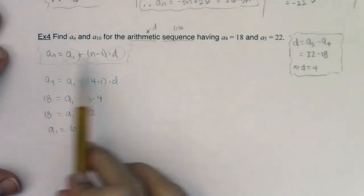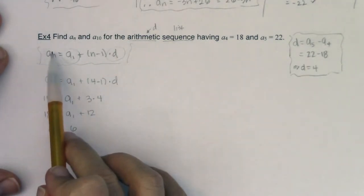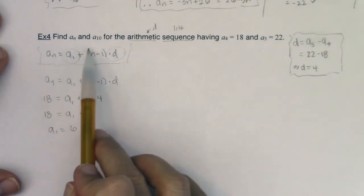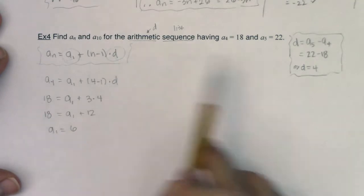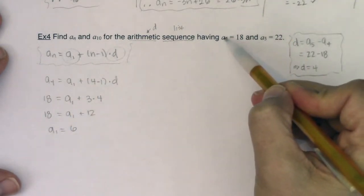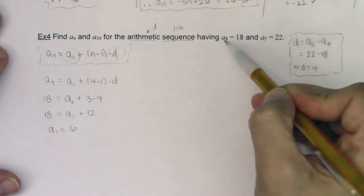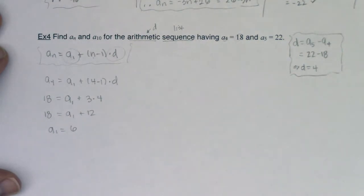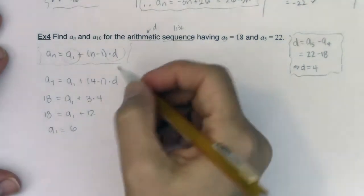So you can rework this formula to find a_1 because again there's always four variables: a_n, a_1, n, and d. Well we just found d. And if I know a_4 is 18 that's two of the variables. You see the n and you see the 18. So then I know this number is 18, but I know this one's 4. And I could have done the same thing with a_5.